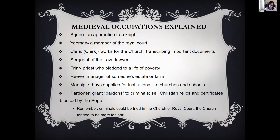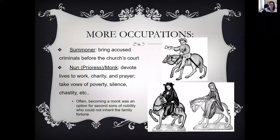Here are some medieval occupations explained — pause this to write those out so you can remember what those characters are. The summoner is someone who brings accused criminals before the church's court — similar to a bounty hunter or detective today, but this was run by the church, which is where Chaucer saw it having too much power. The nun and monk devoted their lives to work, charity, and prayer, taking vows of poverty, silence, and chastity. Often, becoming a monk was an option for second sons of nobility who could not inherit the family fortune.